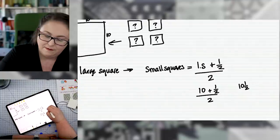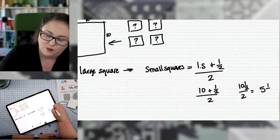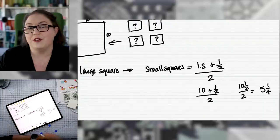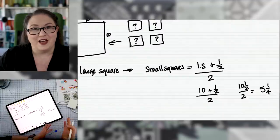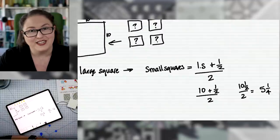plus one half divided by two. 10 and one half divided by two equals five and one quarter. So we would cut four five and a quarter squares to match up with our 10 inch square and that would make perfect four at a time flying geese.